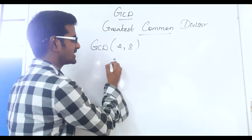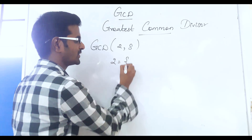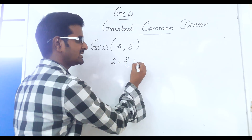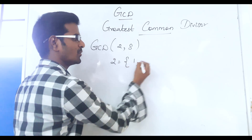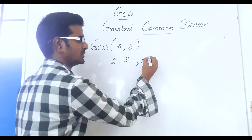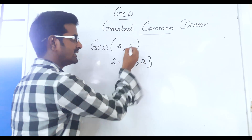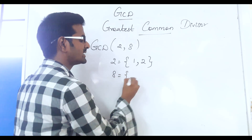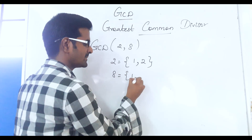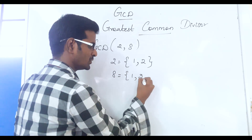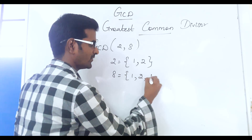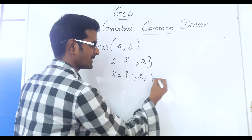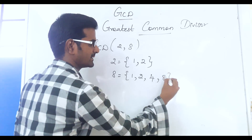First, we will list out the divisors of 2. The divisors of 2 are 1 and 2. The divisors of 8 are 1, 2, 4, and 8.